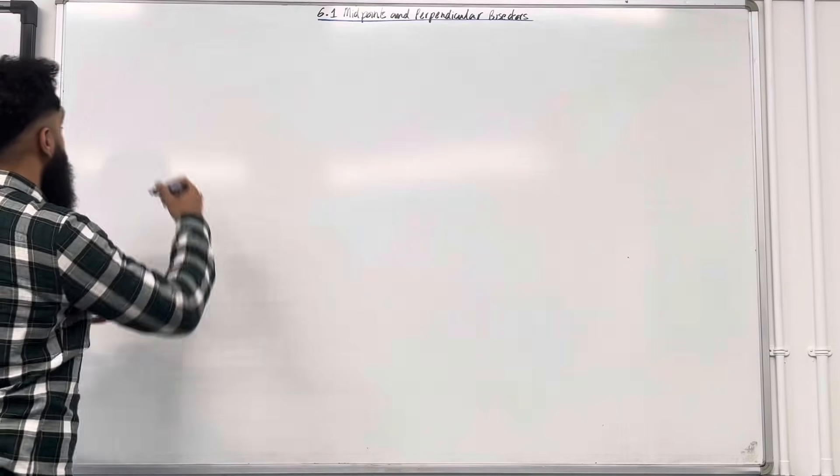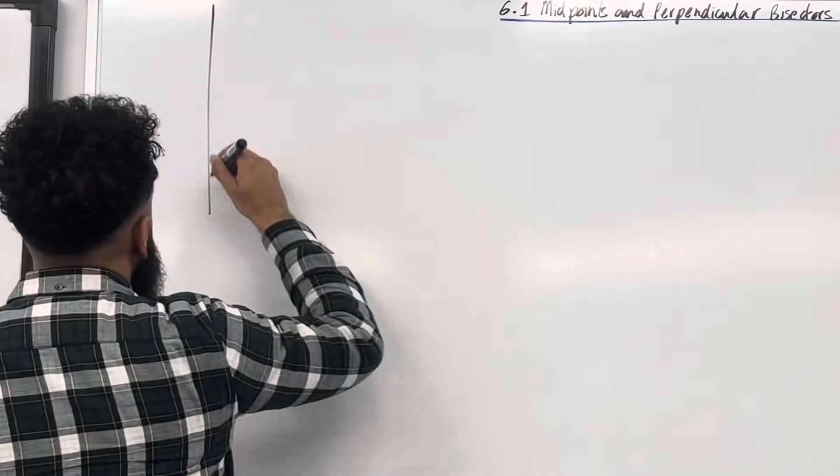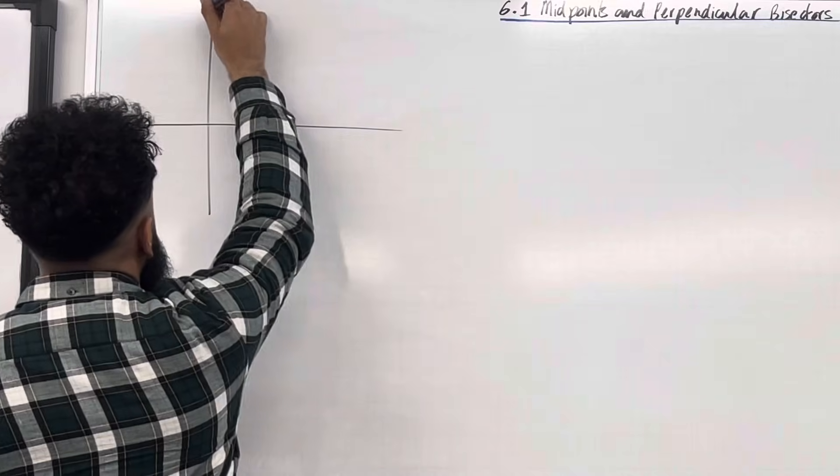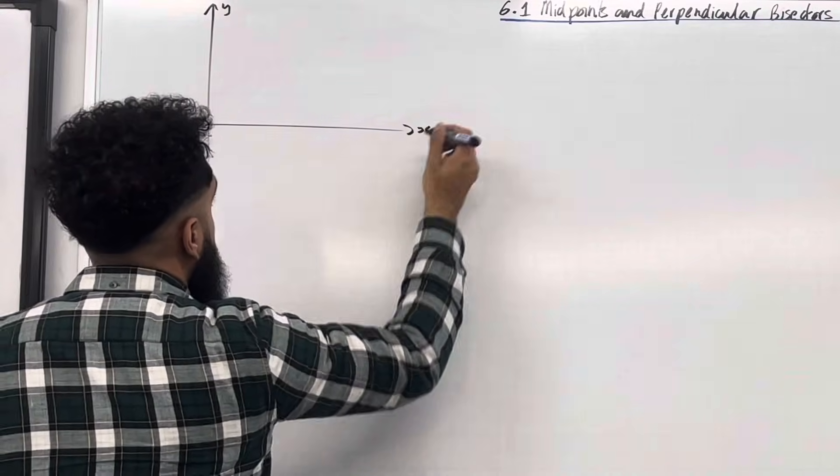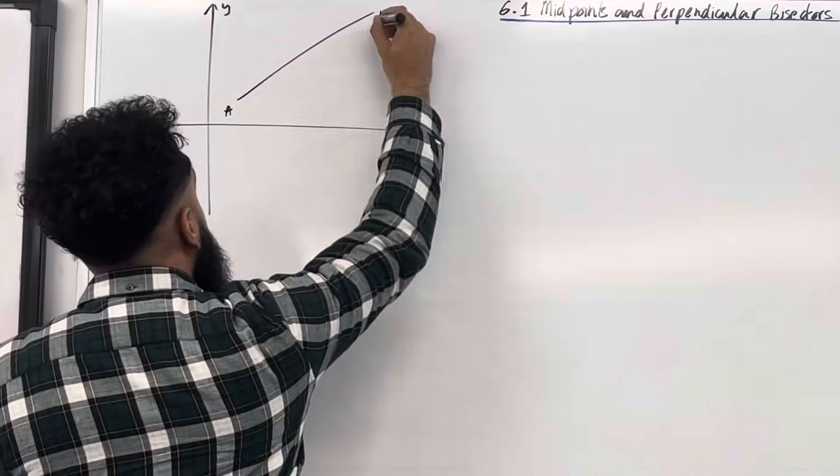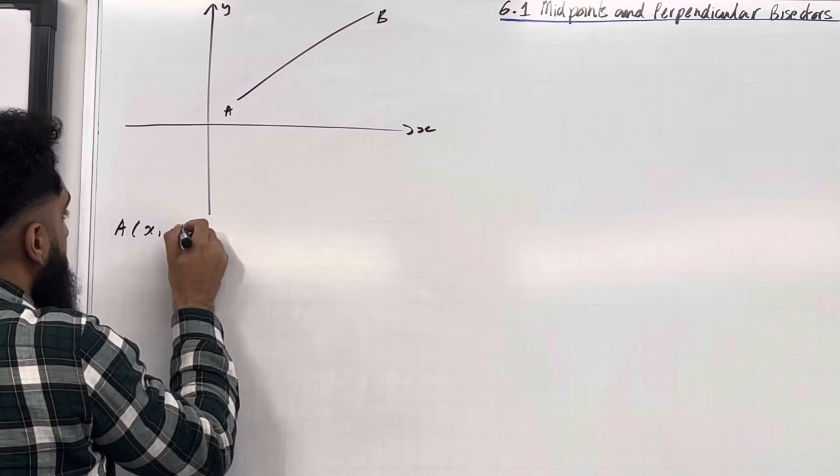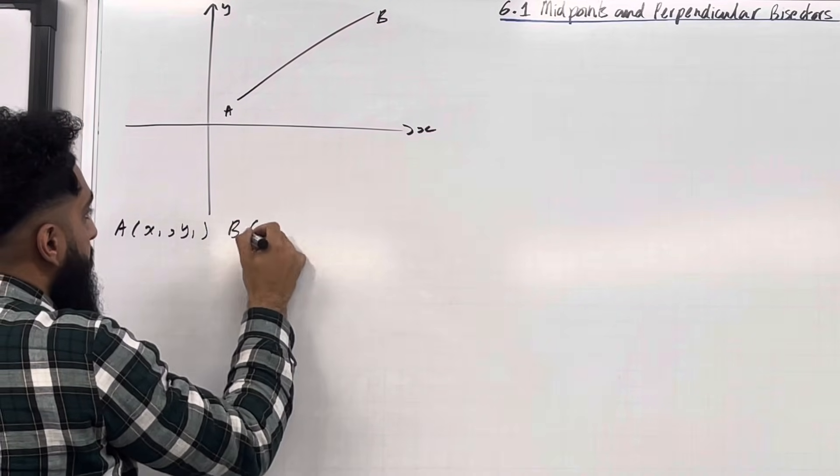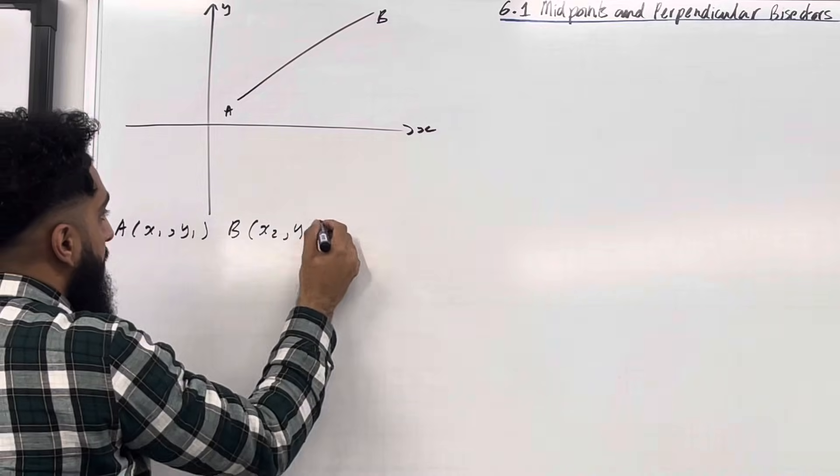Consider the following coordinate grid. We've got the y-axis and the x-axis. Suppose we have the line segment A to B. A has coordinates x1, y1, B has coordinates x2, y2.